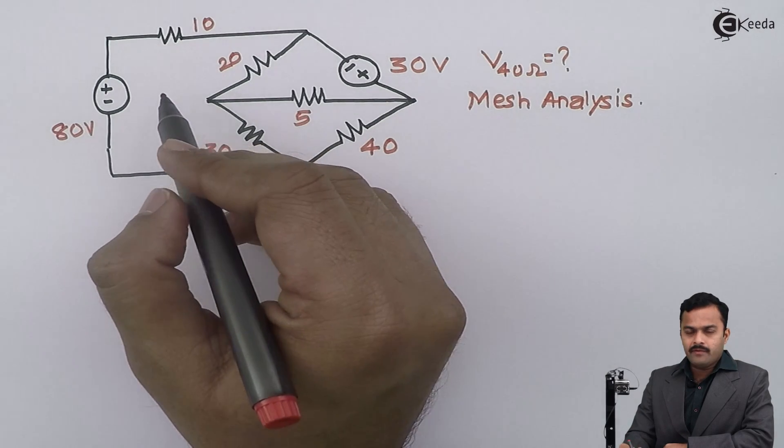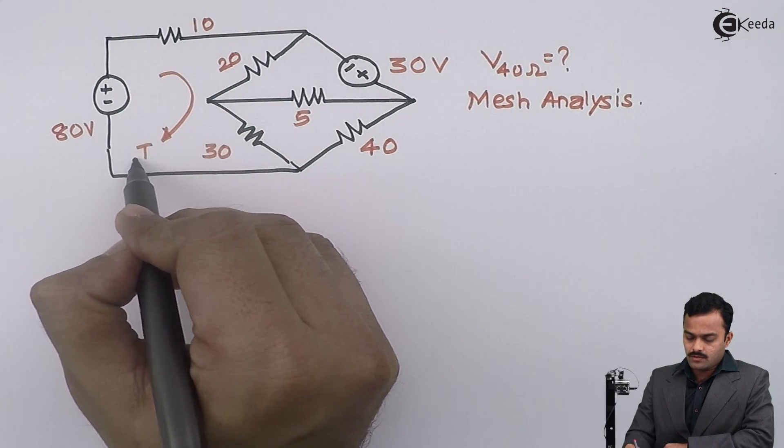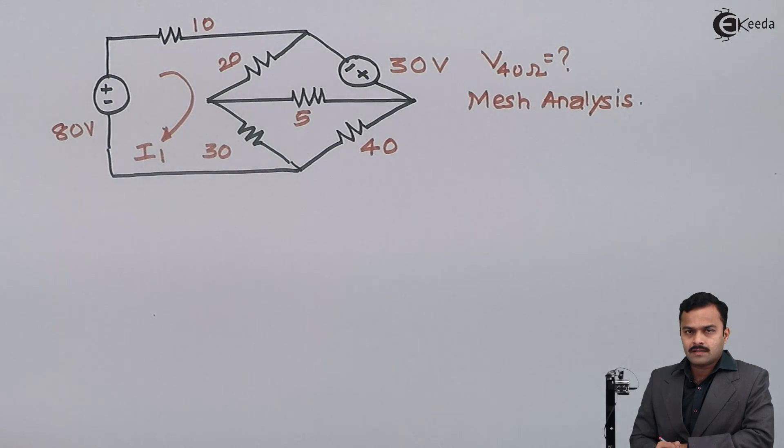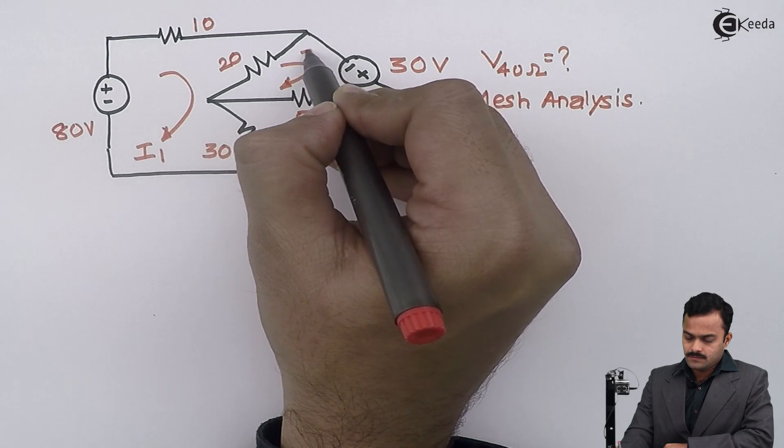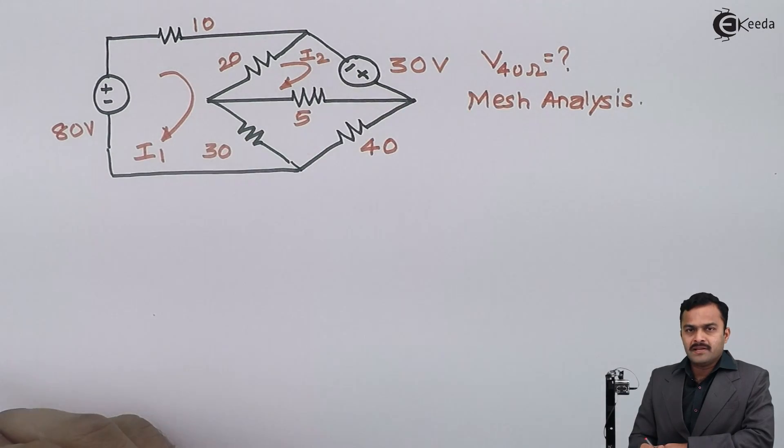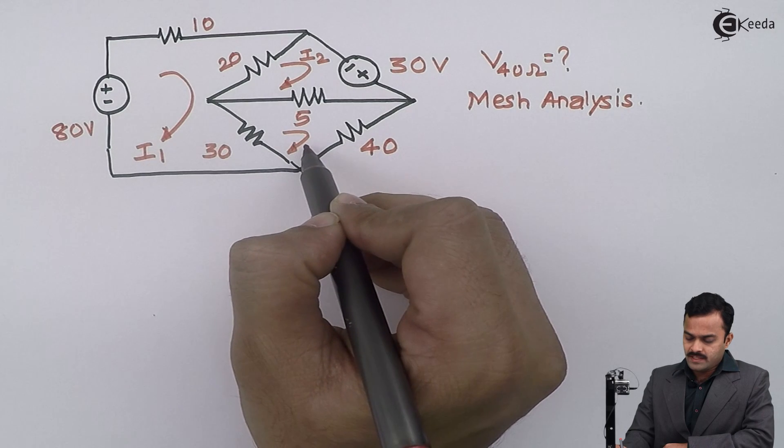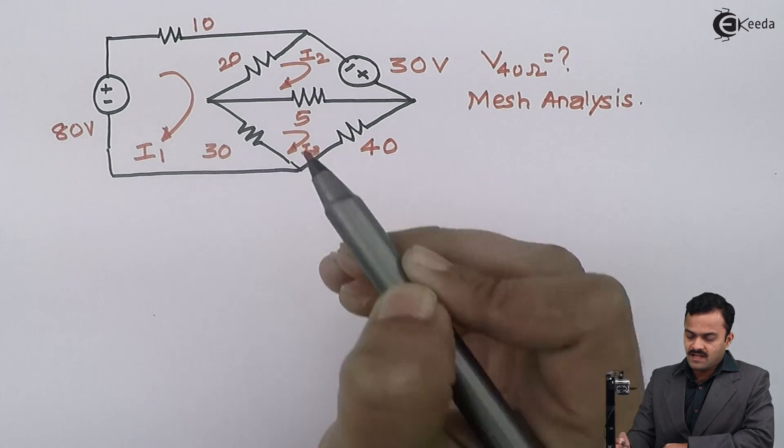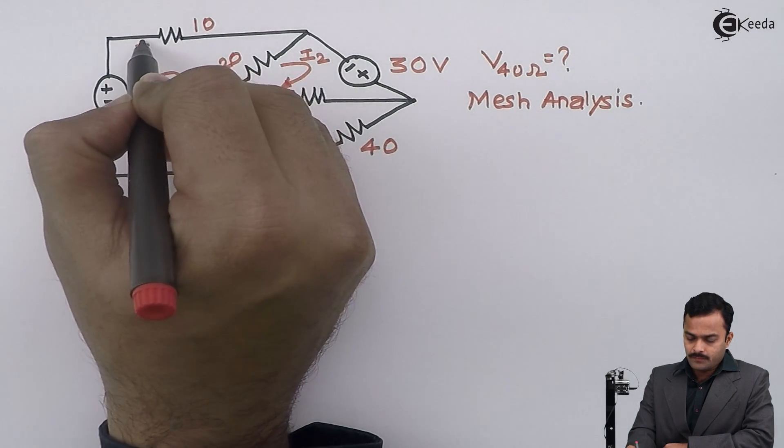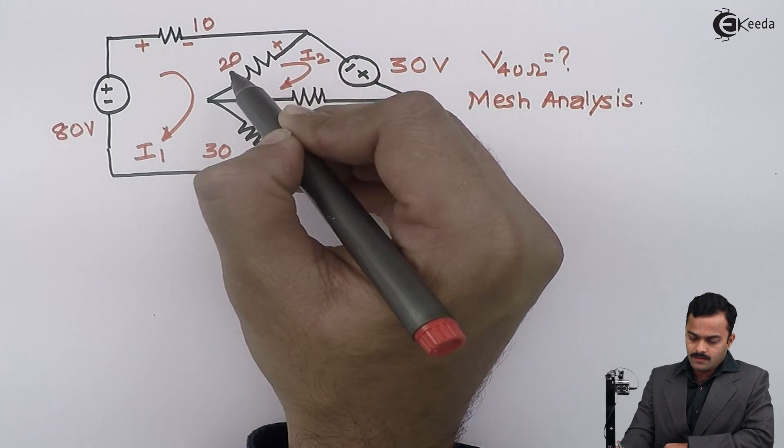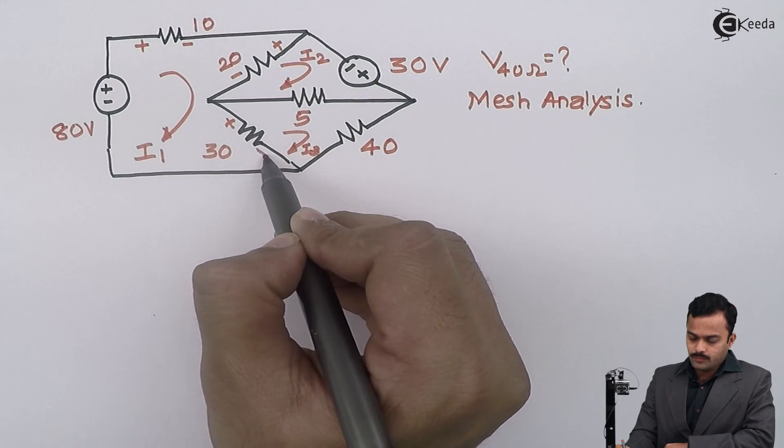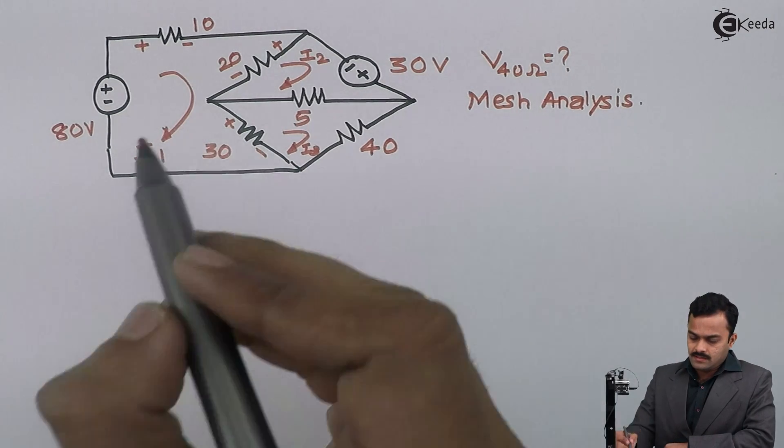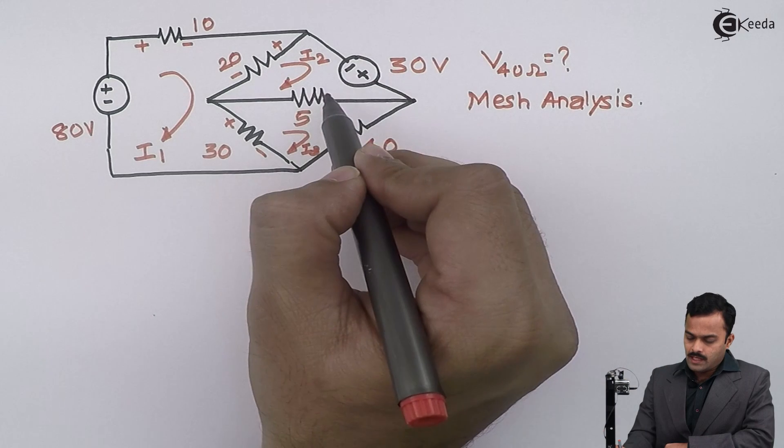I'm having first mesh or first loop - I will mark mesh current I1, second mesh mesh current I2, and third mesh mesh current I3. Based on the direction of current, I will mark voltage drops: plus-minus, plus-minus, this is also plus-minus. For loop 2, I will have voltage drops plus-minus, plus-minus. For loop 3, plus-minus, plus-minus, and plus-minus.